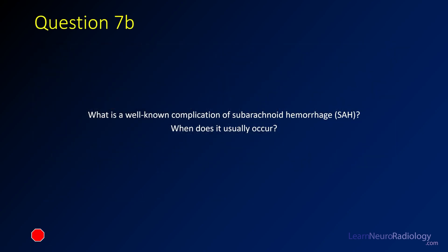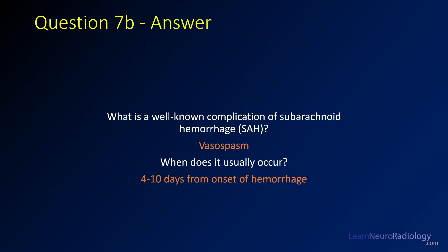Question 7b: What's a well-known complication of subarachnoid hemorrhage and when does it occur? One of the most common complications is vasospasm — essentially a reaction of the vessels of the brain where they narrow inappropriately. You can have complications such as stroke and ischemia. It usually occurs in a delayed fashion after the hemorrhage. It starts around 4 or 5 days, goes maybe 10 to 15 or 18 days. The peak is around 4 to 10 days after subarachnoid hemorrhage.